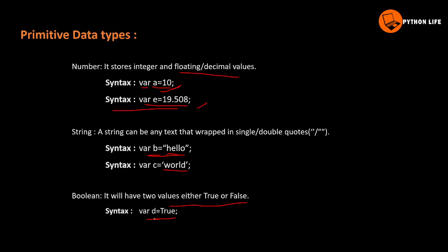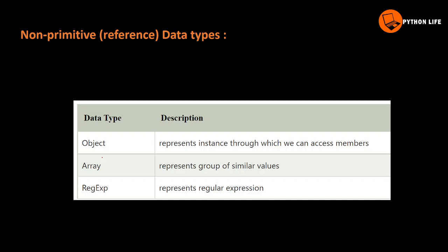Boolean values are used with comparison and relational operators. For non-primitive types, we have object, array, and regular expression. Object and array represent instances through which we can access members — like accessing data from a class or function. Array represents a group of similar values.